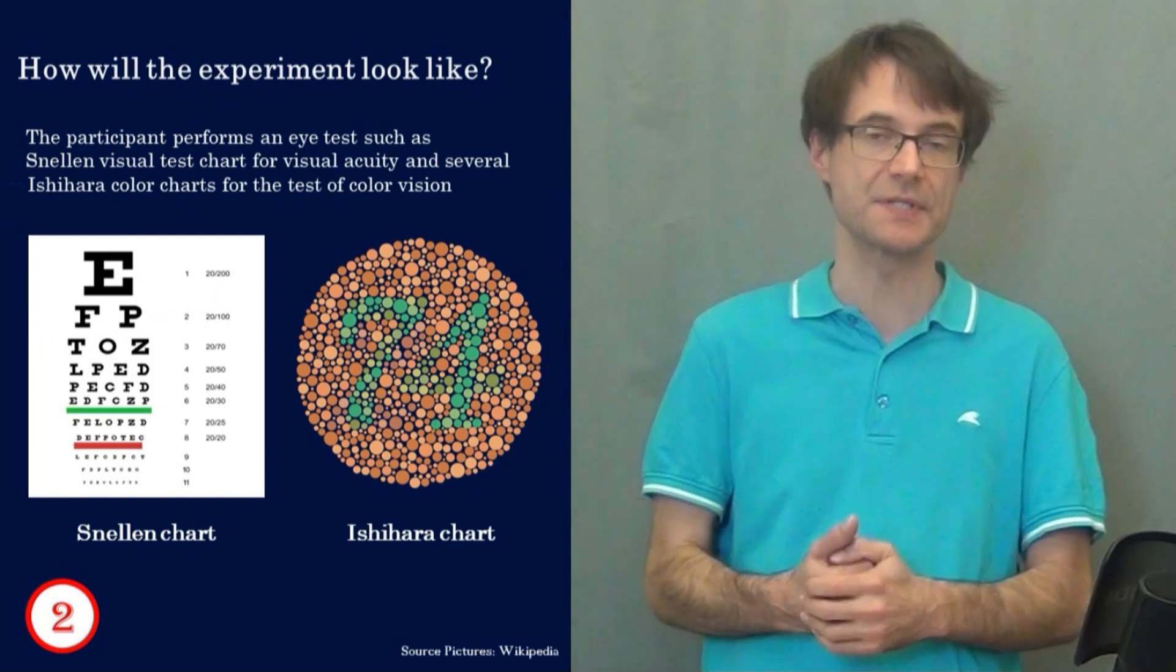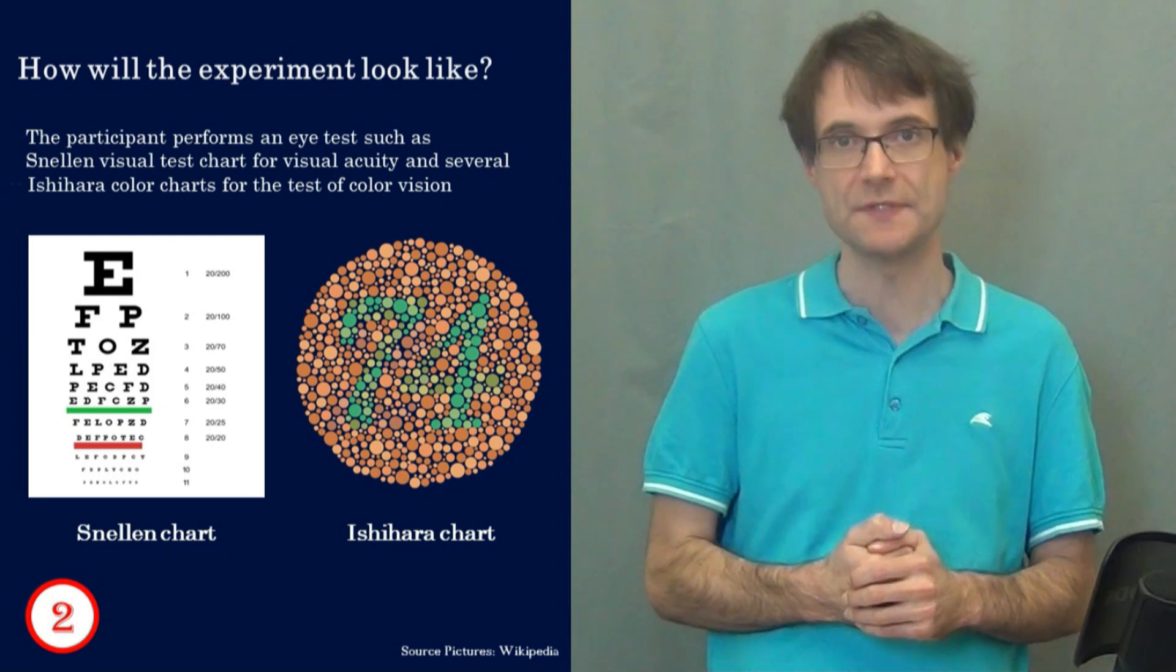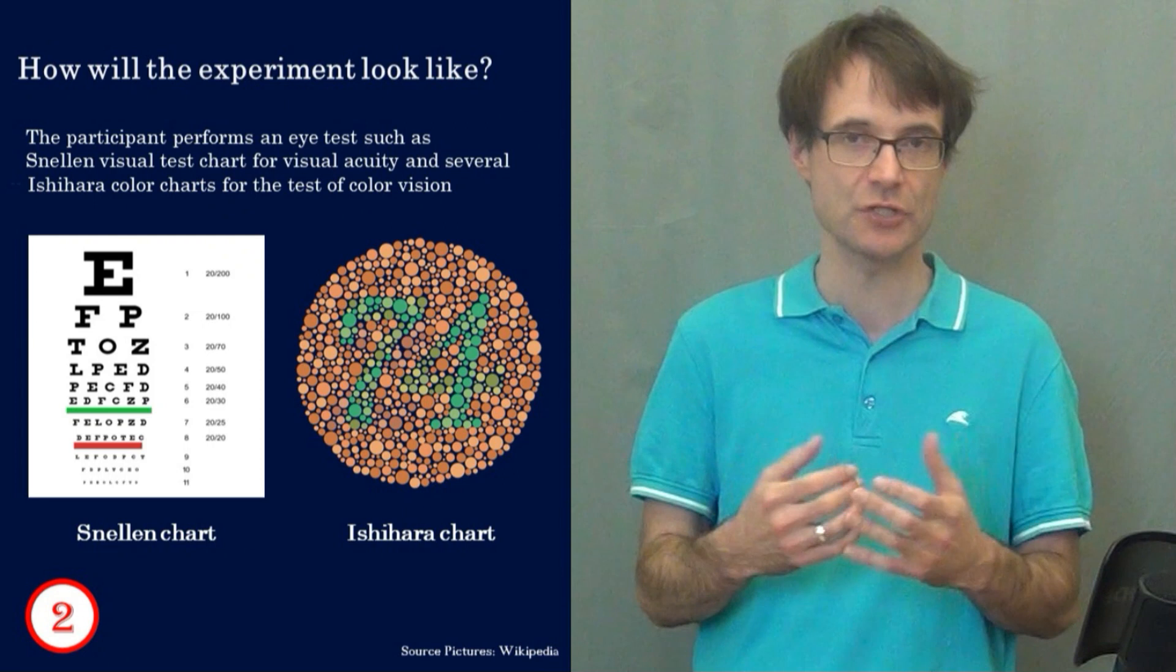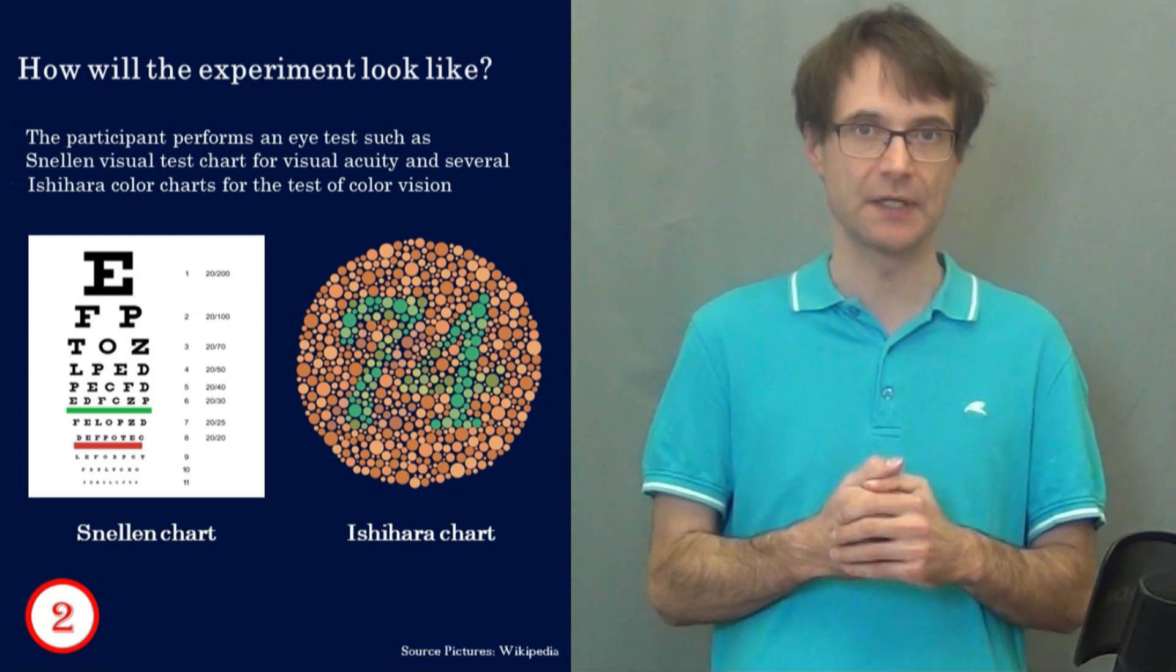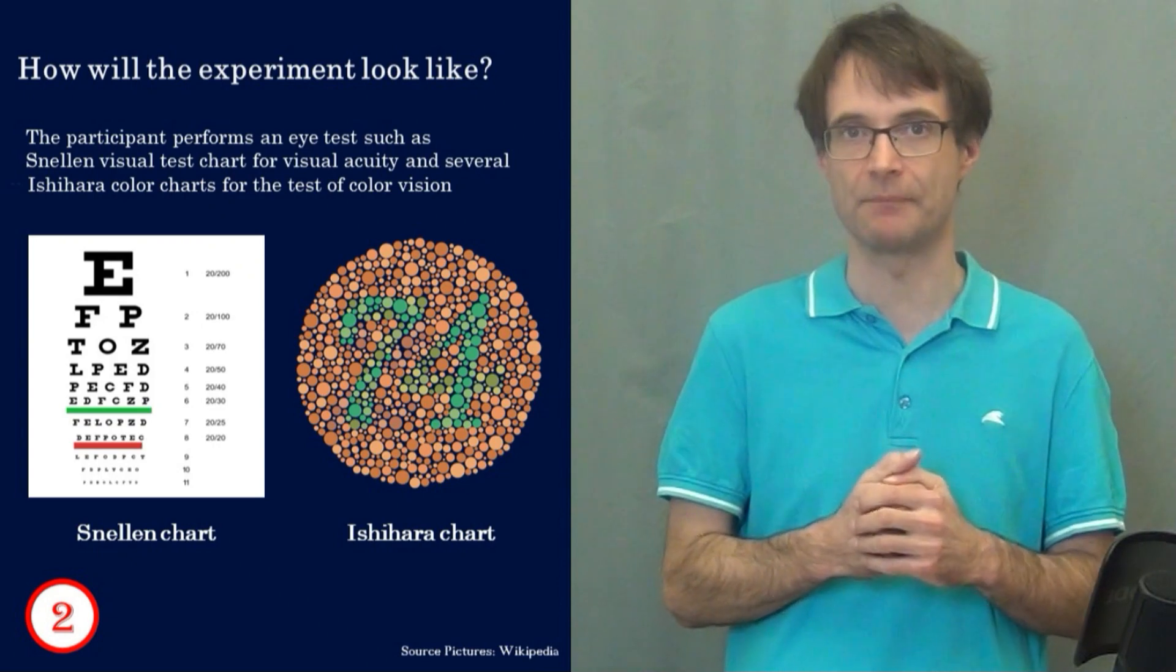Next the participants perform an eye test. In my experiments I've used a Snellen chart for testing the acuity of their vision and I've used the Ishihara color charts for testing the color vision.